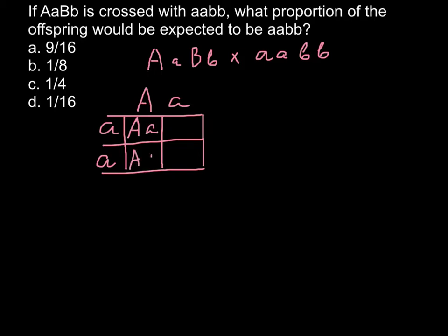Filling the Punnett square for the A alleles: parent 1 contributes capital A and small a, while parent 2 contributes small a and small a. The progeny genotypes are capital A small a, small a small a, capital A small a, and small a small a. As you can see, 50% — or one half — of the offspring would have the genotype small a small a, which is what we are looking for.